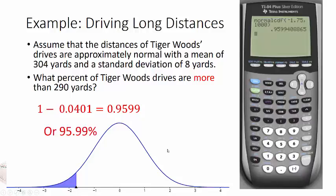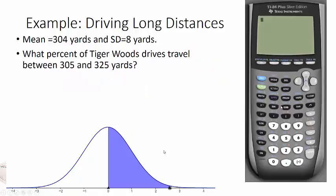So let's take a look at what about between two values. What percent of Tiger Woods drives travel between 305 and 325? So I'm going to do this by hand again. I'm going to have to do new z-scores. And then I'll show you how to do it on the calculator. I still need the z-scores, though.